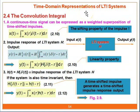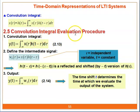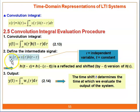The time domain representation of the LTI system: a continuous time signal can be expressed as a weighted superposition of time-shifted impulses, so Xt equals the integral from minus infinity to infinity of X-tau times the impulse of T minus tau d-tau. For the convolution integral evaluation procedure, the output is X-tau times Ht minus tau d-tau. We define the intermediate signal — the area — as W-tau, so X-tau times Ht minus tau equals W-tau.